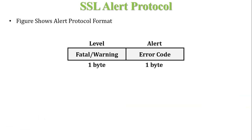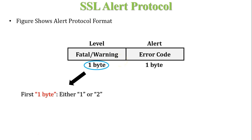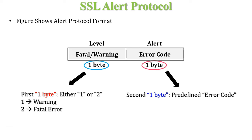The SSL alert protocol occupies 2 bytes. The first byte indicates error or warning — value 1 indicates a warning and value 2 indicates a fatal error. The second byte indicates a predefined error code, i.e., the specific alert type.